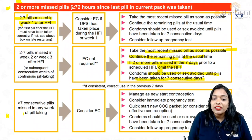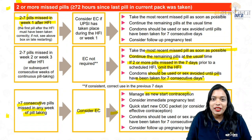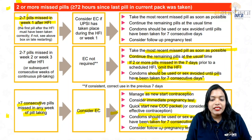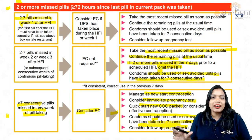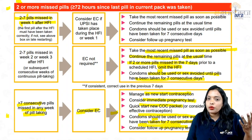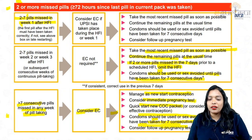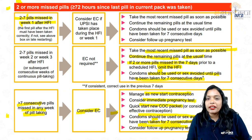If more than seven consecutive pills are missed in any week, consider emergency contraception. Manage as a new-start contraception. Consider an immediate pregnancy test. Quick-start a new OCP packet. Condoms should be used or sex should be avoided for the next seven days. Consider a follow-up pregnancy test. So when more than seven consecutive pills are missed, treat it as starting contraception fresh — use additional contraception for seven days, do an immediate pregnancy test, and again a follow-up pregnancy test after the entire 21-day course.